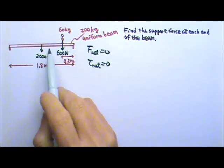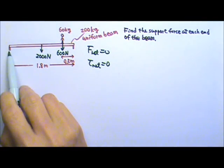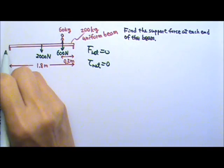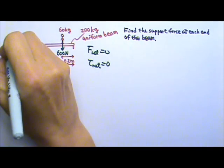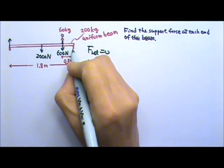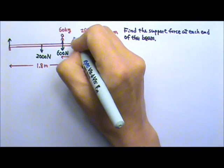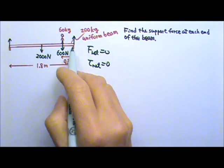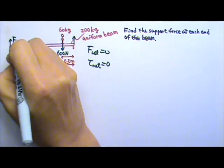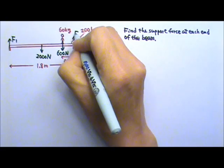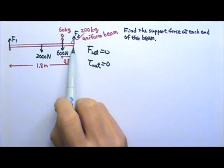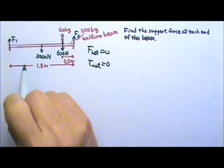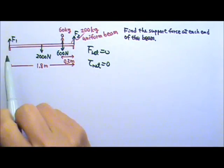The beam is also touching the two supports, so we get forces from the two supports. The force from this support will go up, and the force from this support also goes upward — and we need to find those two forces. I'm going to call this force F1 and that force F2. The person and the beam are not touching anything else, so those two are what we have to find.